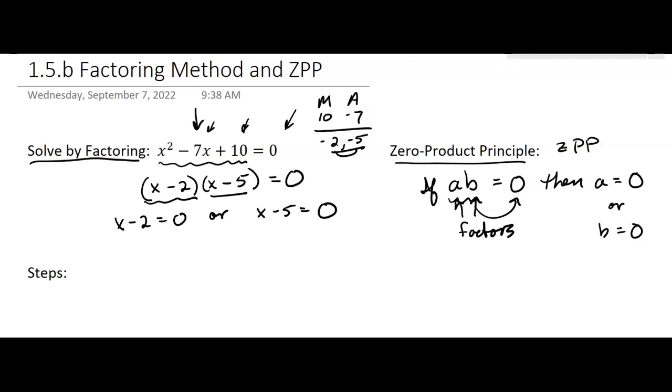And so in this case, we're going to get two solutions. You just solve, this is now a linear equation, so it's this one. And we just solve those, you know, here we're going to add 2 to both sides. So you get x equals 2, and here you're going to add 5 to both sides, and you get x equals 5.